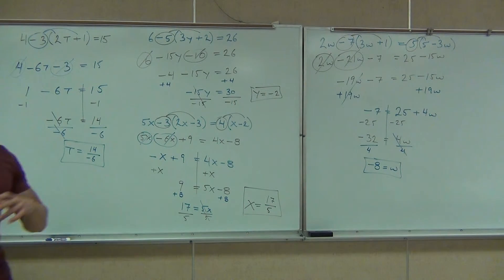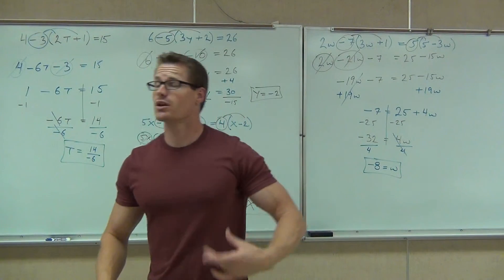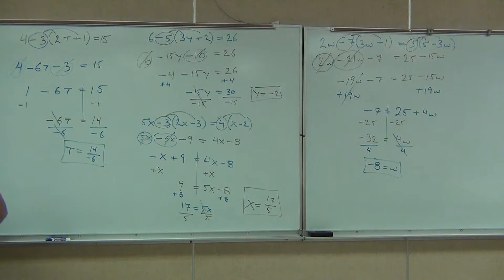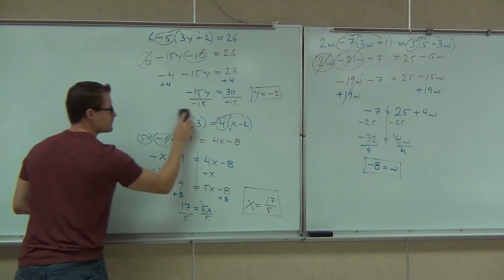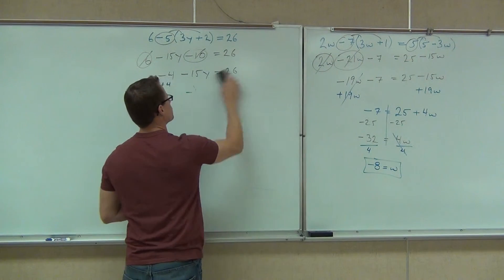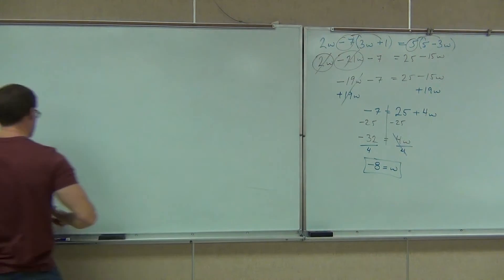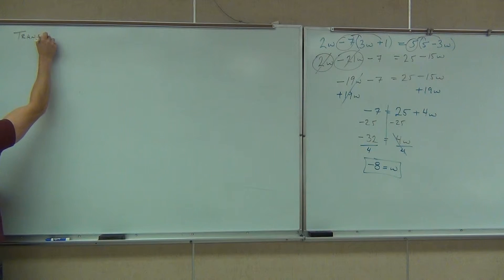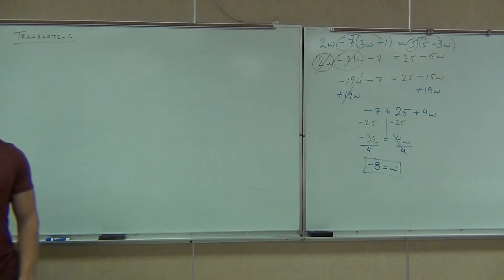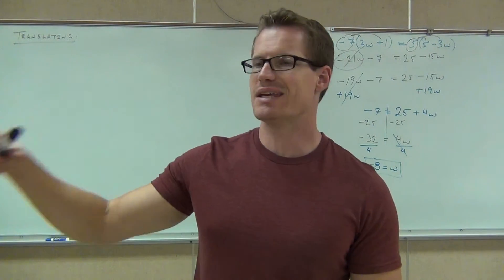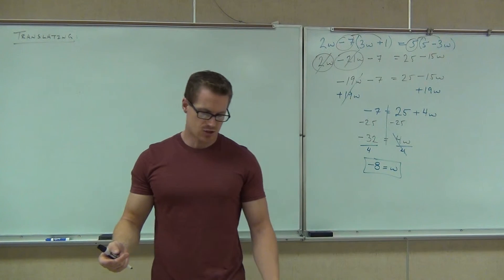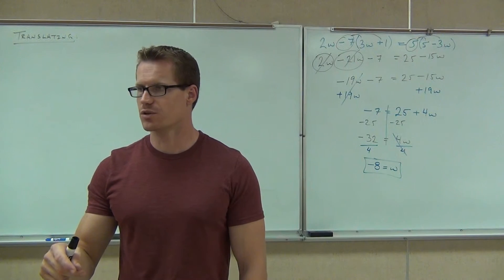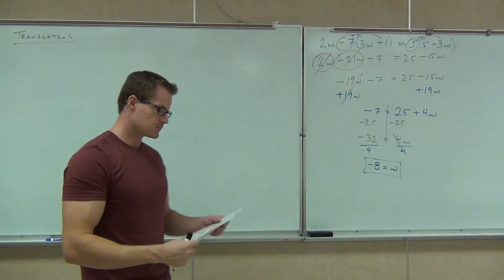Now for the last bit of this section, we start with some basic translating — we're going to translate sentences into equations. This will lead us into section 3.4 where we'll do some heavy-duty translating. We've already translated expressions without equal signs; the only new thing is learning words that mean equals.